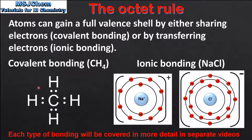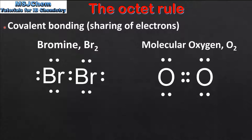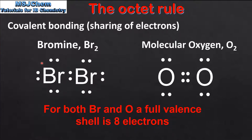On the left we have the Lewis structure of CH4, which is methane. The atoms in methane are held together by covalent bonds. On the right we have an example of ionic bonding. Ionic bonding occurs between oppositely charged ions. Next we'll look at covalent bonding, which is the sharing of electrons. Here we can see two Lewis structures: bromine on the left and molecular oxygen on the right. A molecule of bromine consists of two bromine atoms bonded by a single covalent bond.